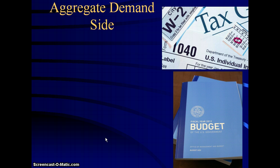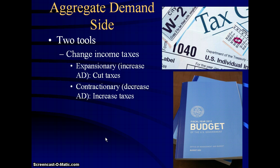When we talk about fiscal policy, 99.9% of the time we're going to be talking about aggregate demand, not aggregate supply. When we want to affect aggregate demand as the government, there are two ways. The first is to change income taxes, or really any taxes on the consumer - sales taxes, social security tax, income tax, any taxes on the average person. These come in two forms that we've come across before, just not in this context.